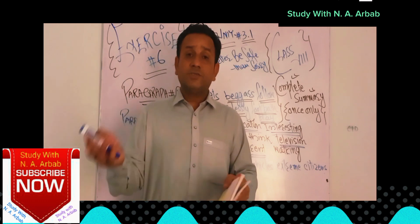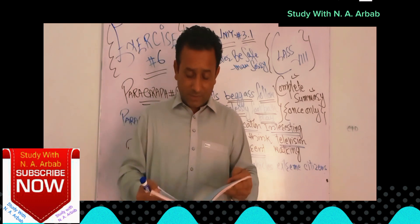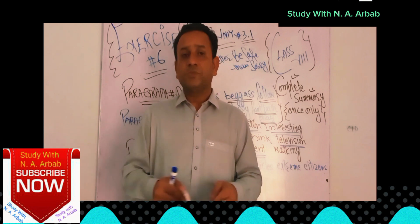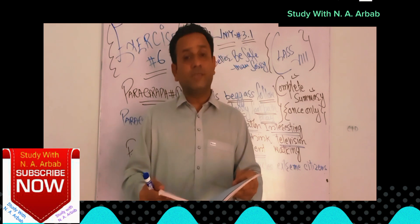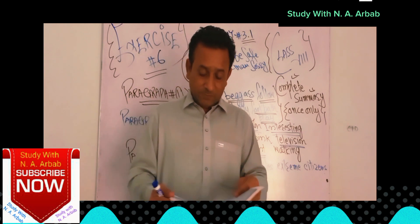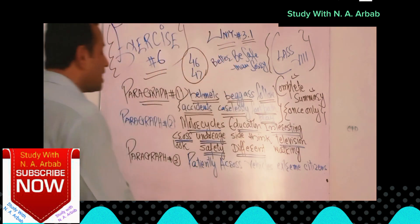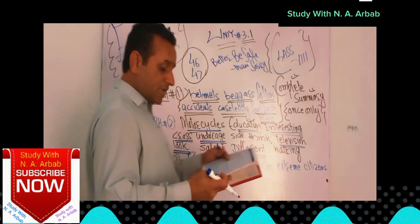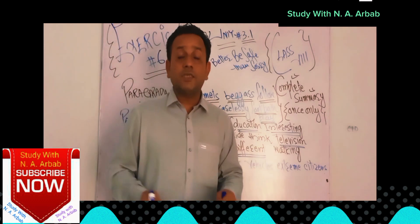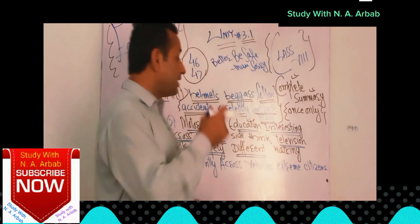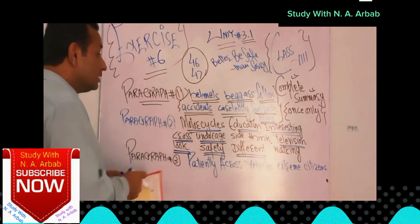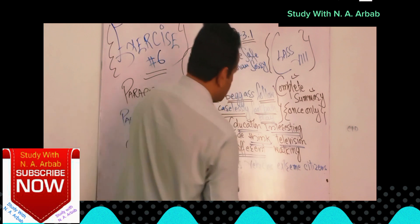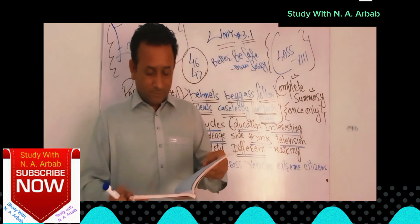The Green Cross Code teaches traffic awareness. The steps are: Stop, Look, Listen, Think, and Cross. You must stop, look both sides, listen carefully, think, and then cross the road safely.